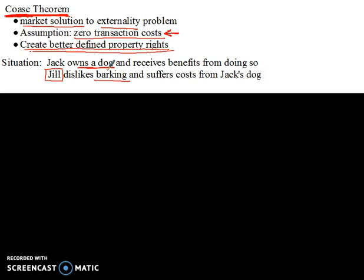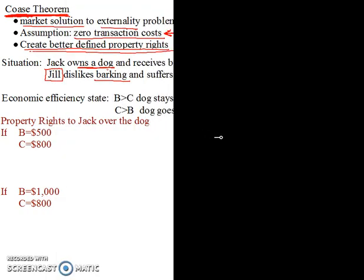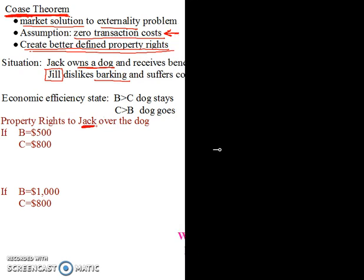So Ronald Coase says: what if instead we solved this by better defining private property rights? There are actually two ways to do this. One way is to give private property rights over the dog to Jack. Efficiency says that if the benefits of the dog outweigh the costs, the dog should stay; if the costs outweigh the benefits, the dog should go. So let's see what happens if we give Jack private property rights. Imagine Jack gets $500 of benefits from the dog — meaning he'd be willing to pay up to $500 to keep it.